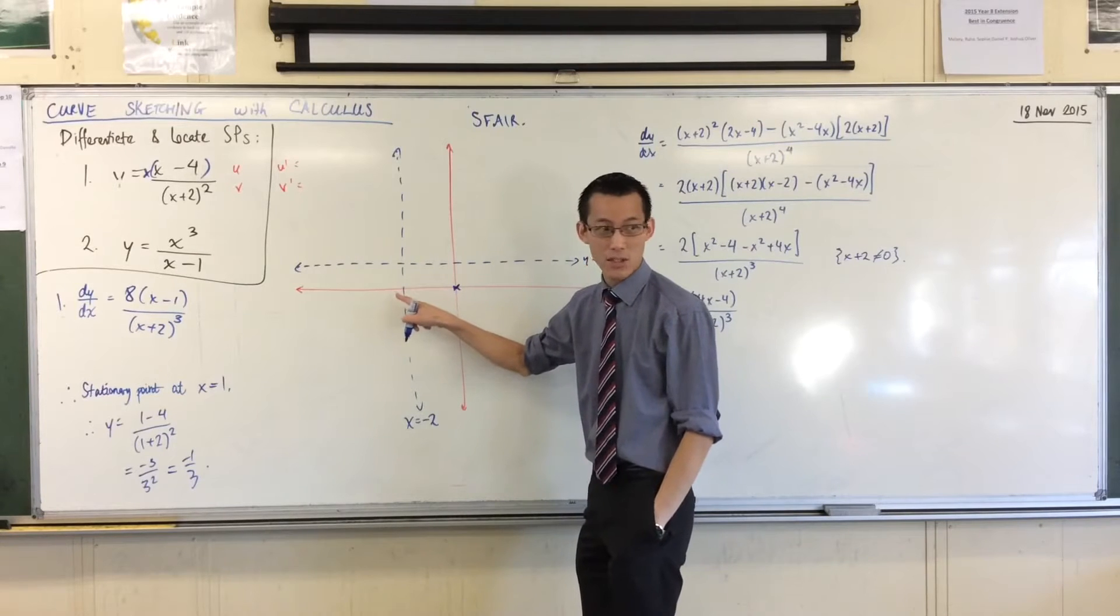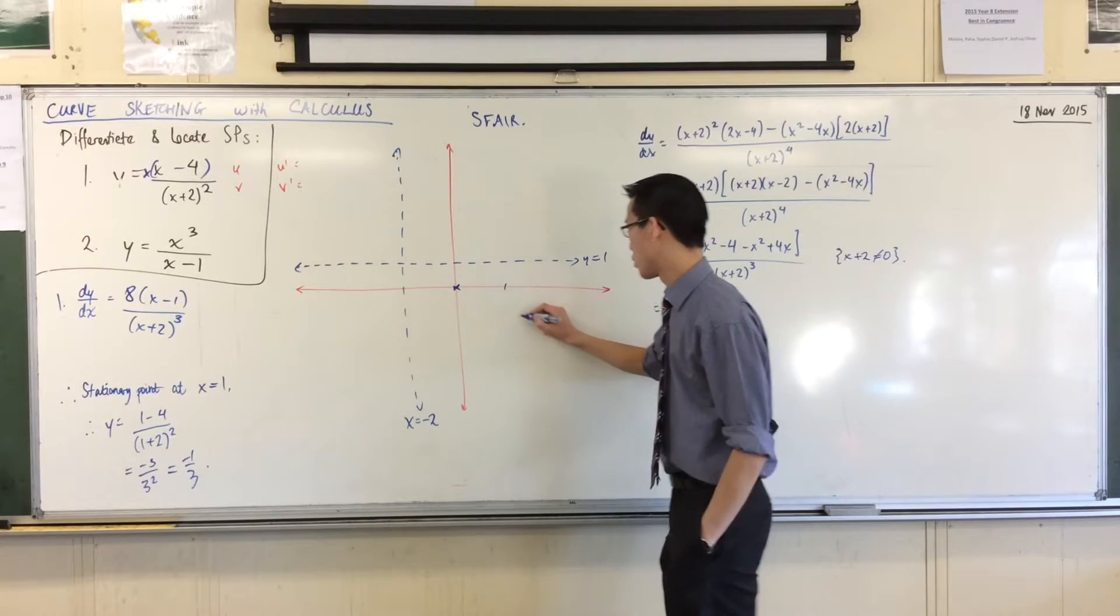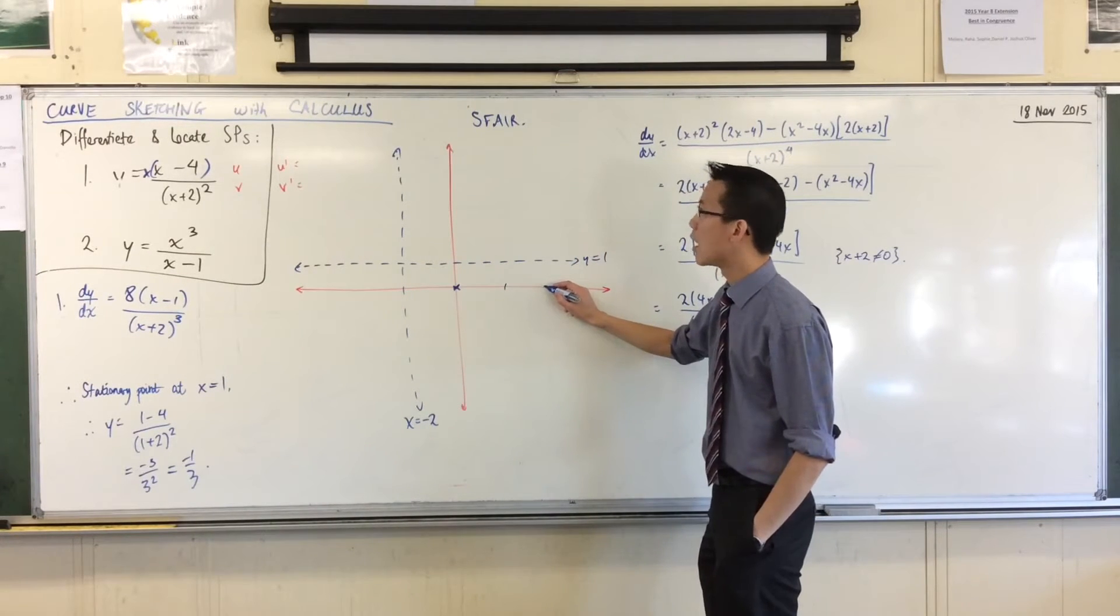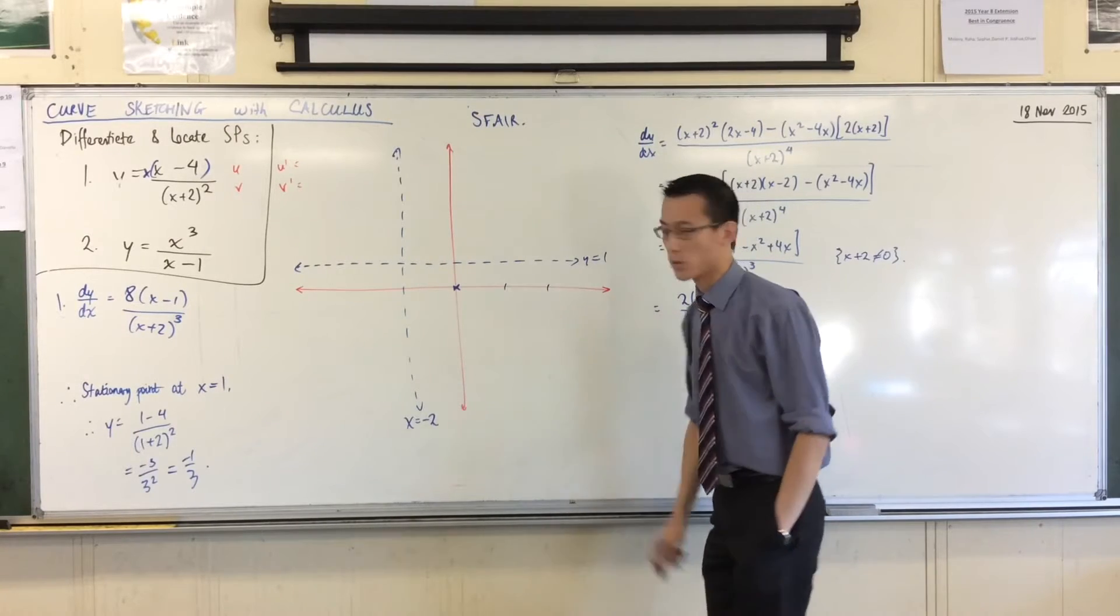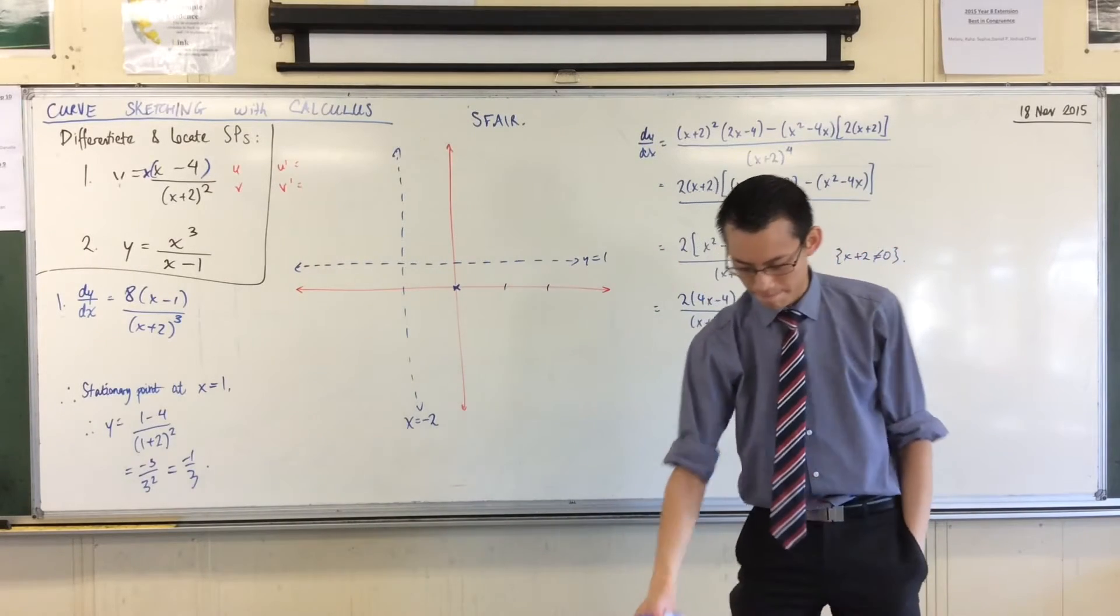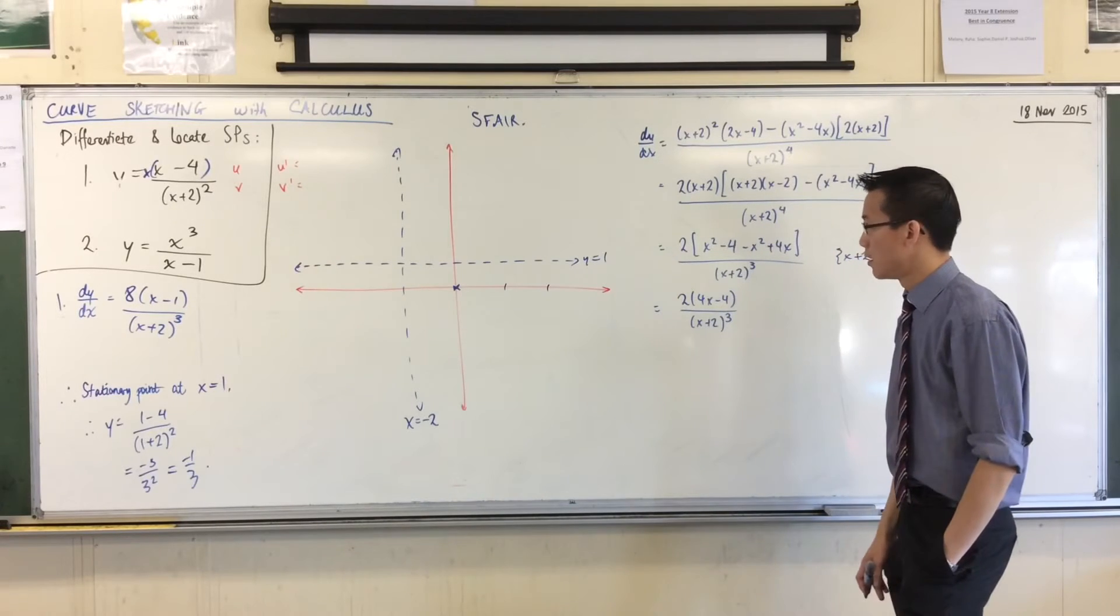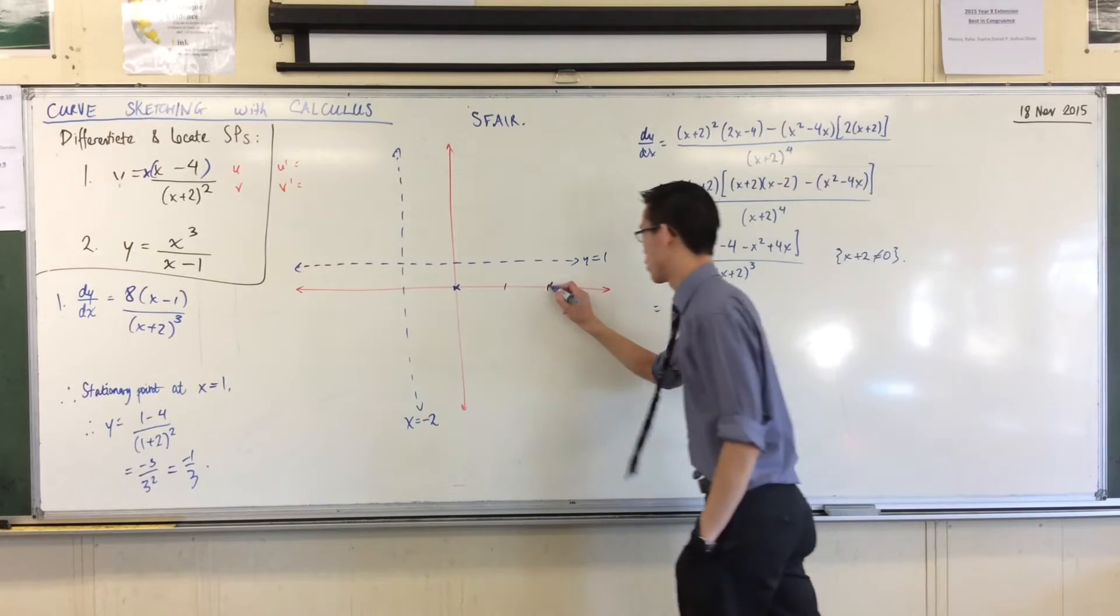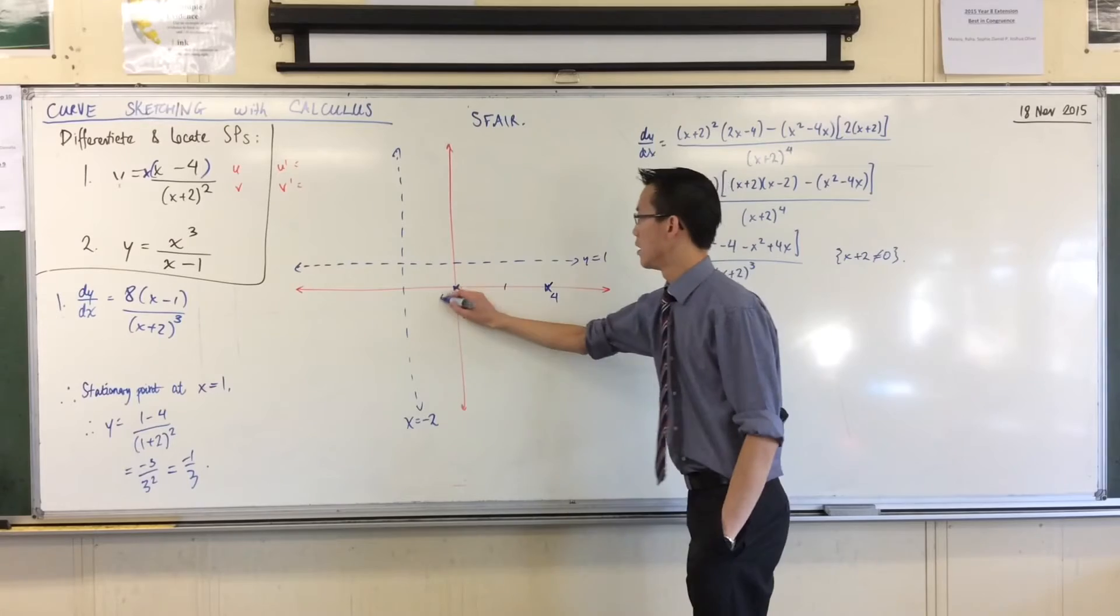If I'm saying that's x equals negative 2, then that would be x equals 2, and that would be x equals 4, roughly. Okay, so far so good. Sorry, I should put a cross there, and that's 4, and that's 0.